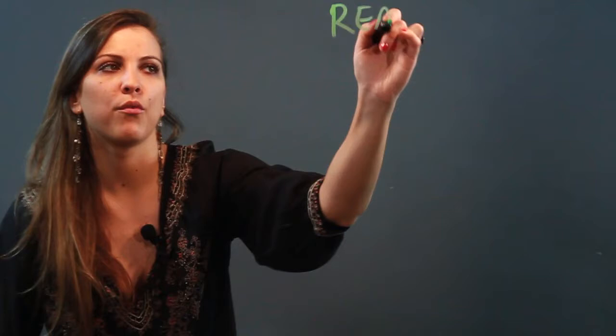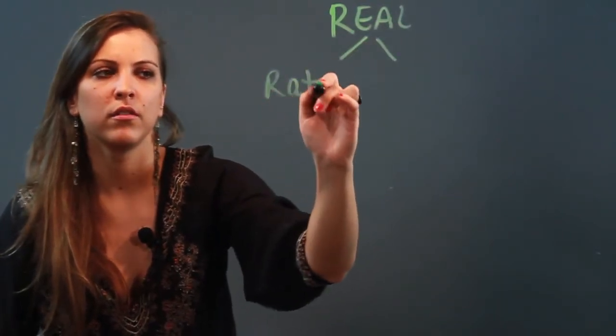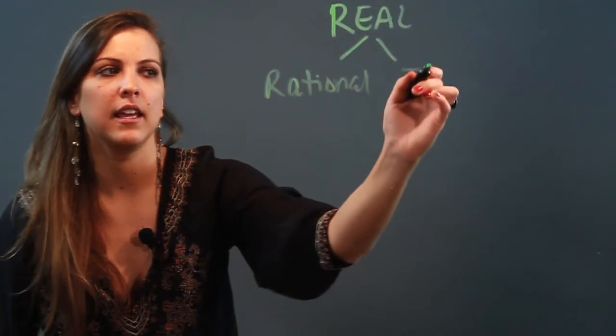Now, irrational numbers are actually just a subset of real numbers, so what we might want to compare instead is irrational and rational. So you've got the large set of real numbers, and that's split into rational and irrational.